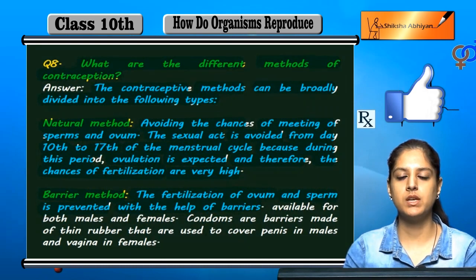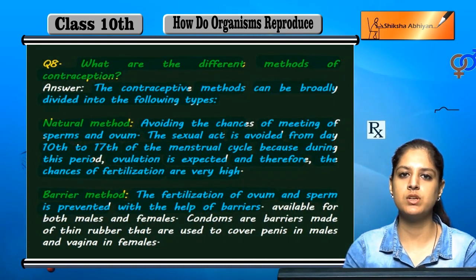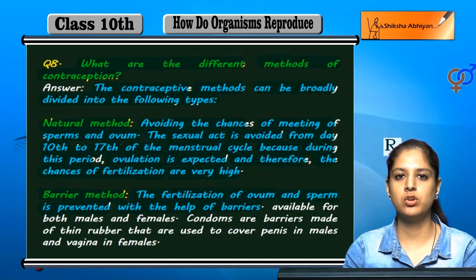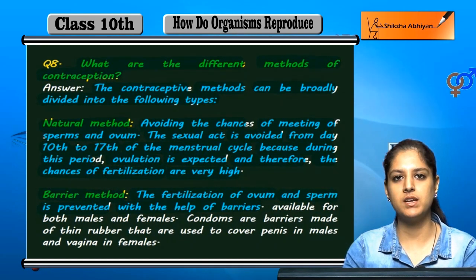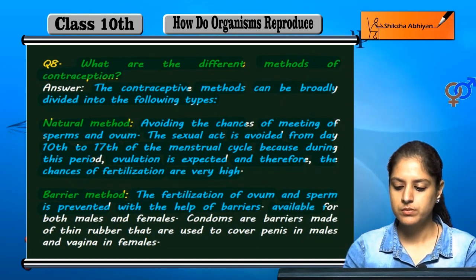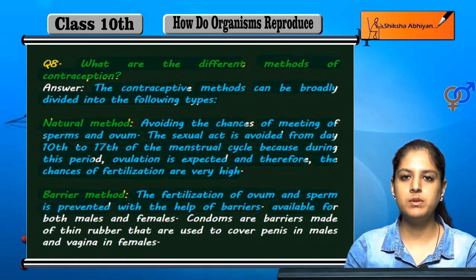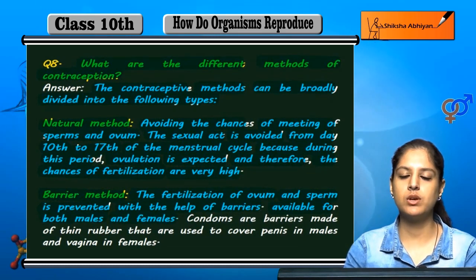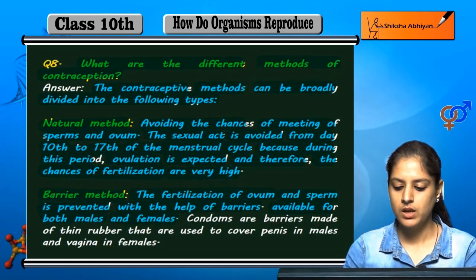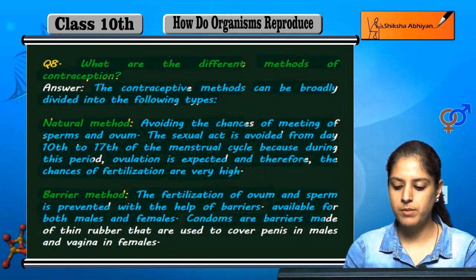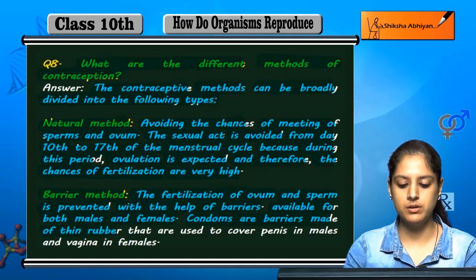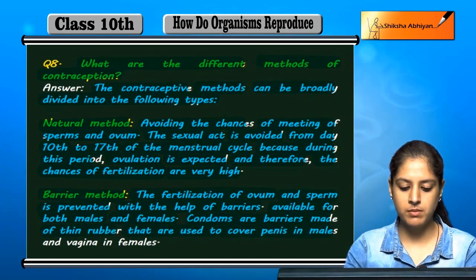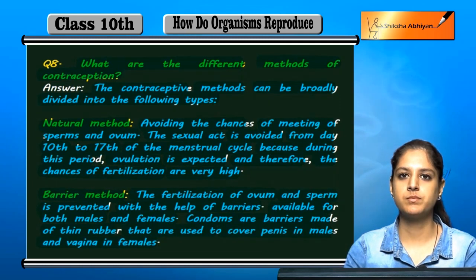We can prevent the fertilization of sperm and ovum if we place a barrier between them. Barriers are available for both males and females. Condoms are barriers made of thin rubber that are used to cover the penis in males and the vagina in females.